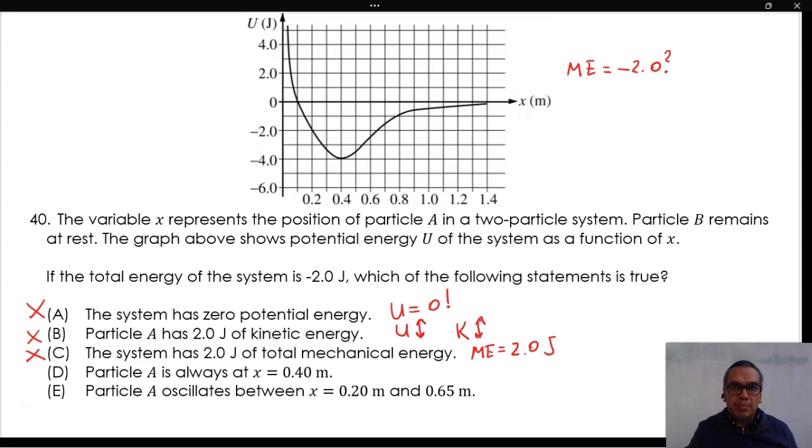D. Particle A is always at X equals 0.40 m. Particle A cannot be at rest at that position. The correct answer is option E.